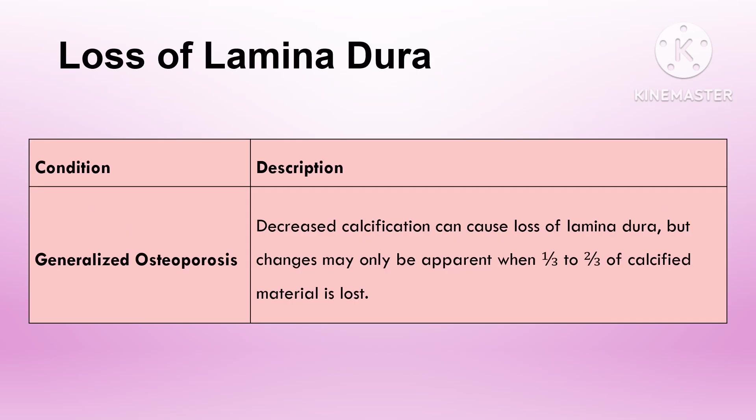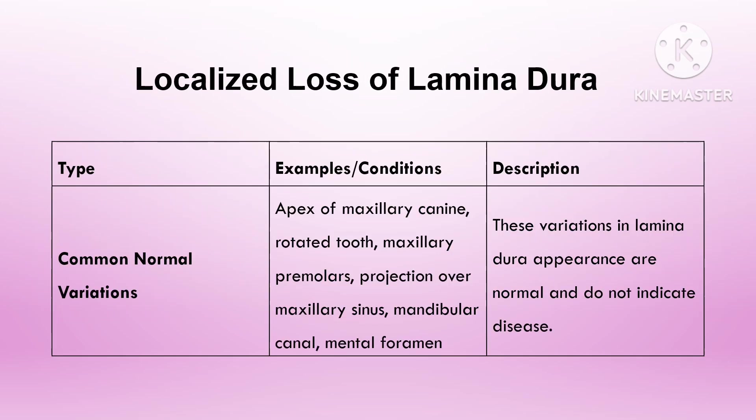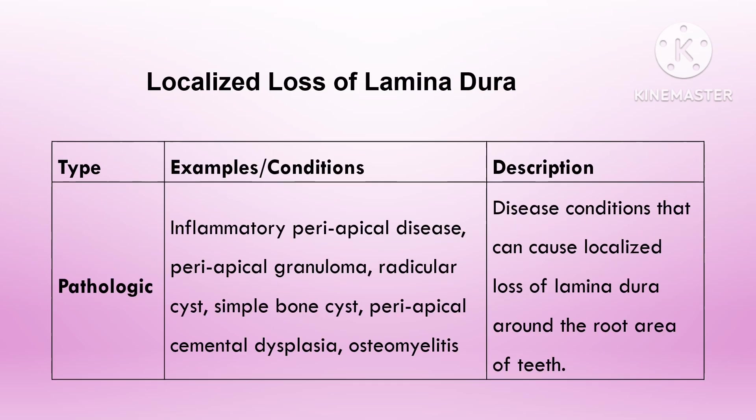The appearance of the lamina dura on a dental radiograph can indicate underlying pathology when it deviates from the normal presentation of a continuous radiopaque line. Thinning or loss of the lamina dura may be due to periodontal diseases.